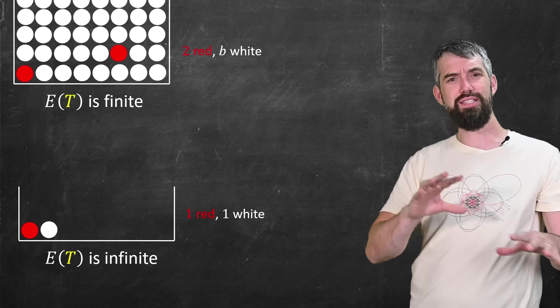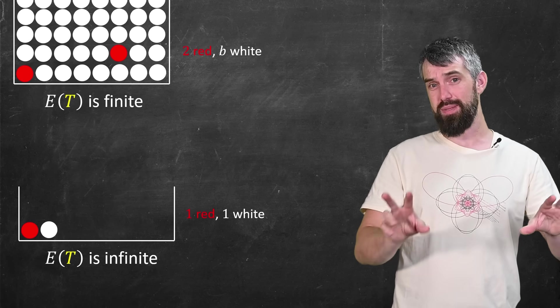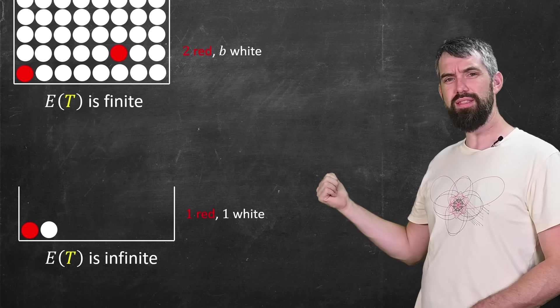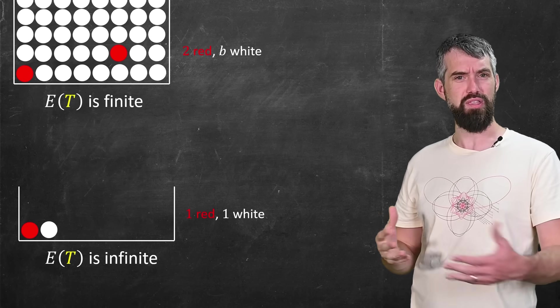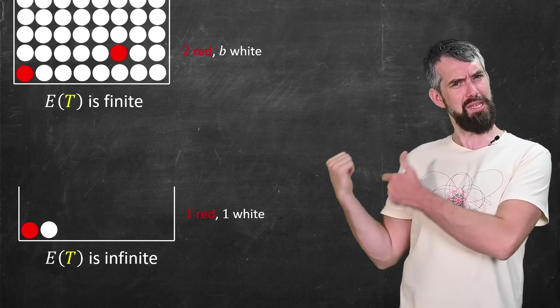And so at the end of the day, these two cases seem almost backwards. In the scenario with a ton of white balls but only two red balls, it actually turns out that there's a finite amount of time that you can expect before you get a red ball.